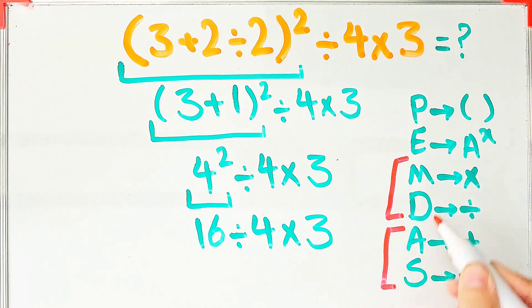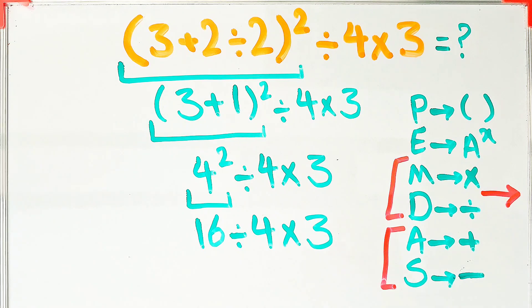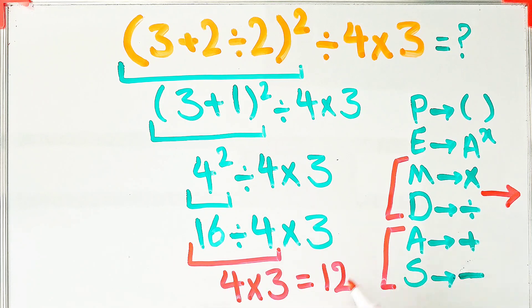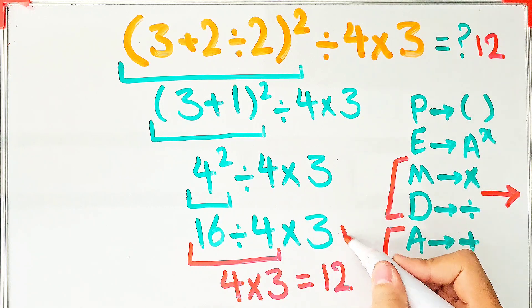16 divided by 4 equals 4, and 4 times 3 equals 12. We get the final answer of this question: final answer is 12. To see more math videos, subscribe to the channel. Goodbye!